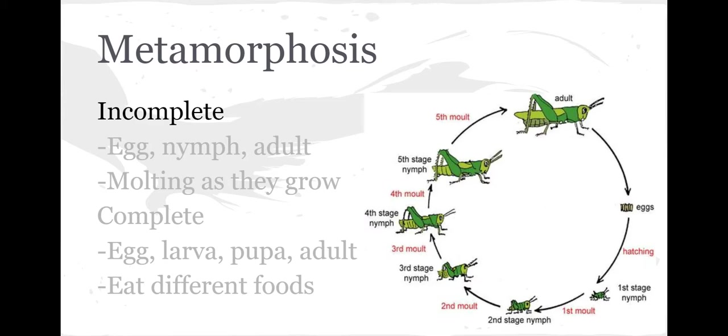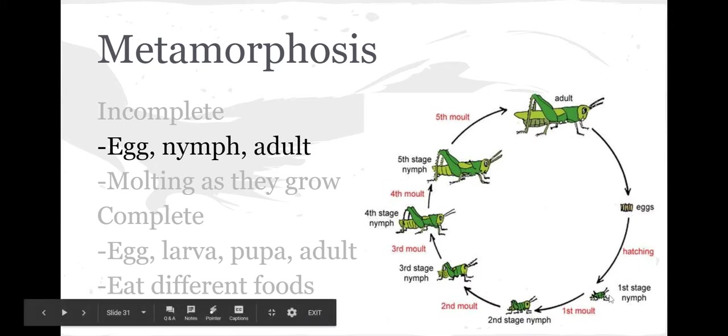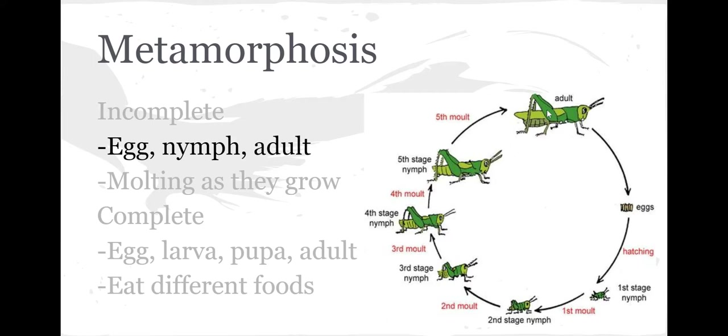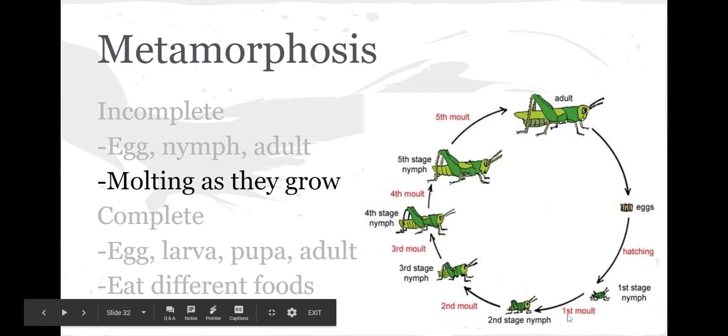When we talk about insects, we also need to touch on metamorphosis and how they go through life changes. With incomplete metamorphosis, like this grasshopper, they start as an egg, then turn into this tiny thing that almost looks like an adult but is really small, called a nymph. The nymph goes through several moltings until it reaches adult size. We call this incomplete because it doesn't really change—it just grows bigger and keeps molting until it's adult.